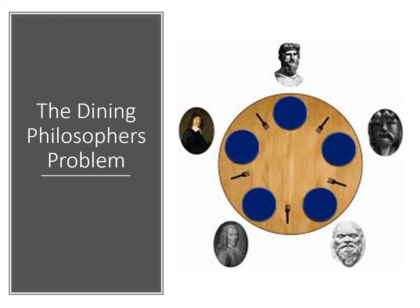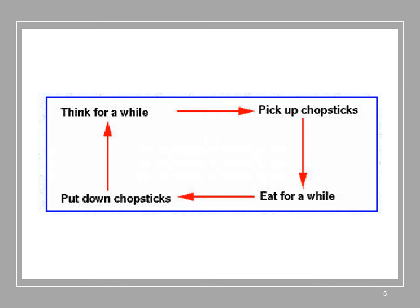The general problem is known as resource contention. We have five philosophers sat around a table — philosophers in all the examples are unfortunately all male, but we'll fix that another time. Basically, all philosophers either eat or think, and there's a shared fork or chopstick. To be able to eat, a philosopher needs to acquire both forks or both chopsticks before they can eat.